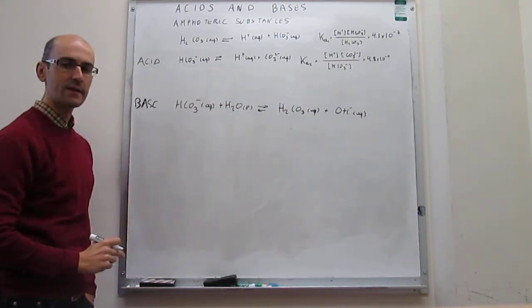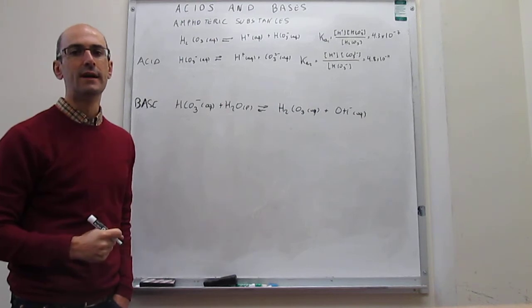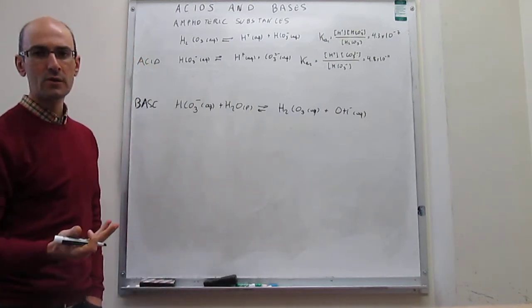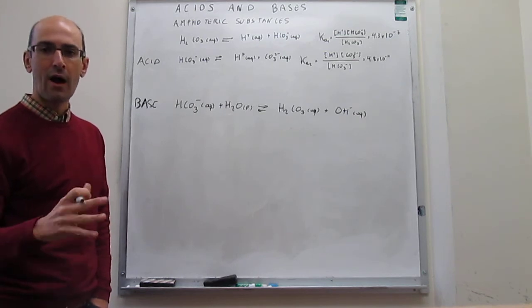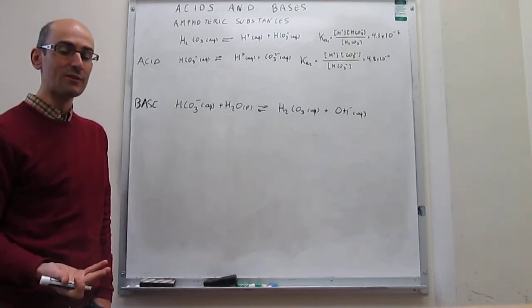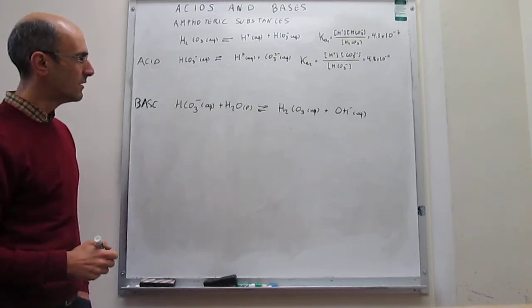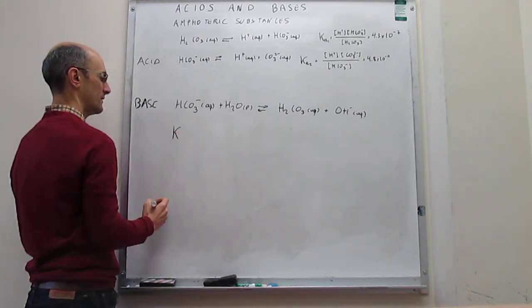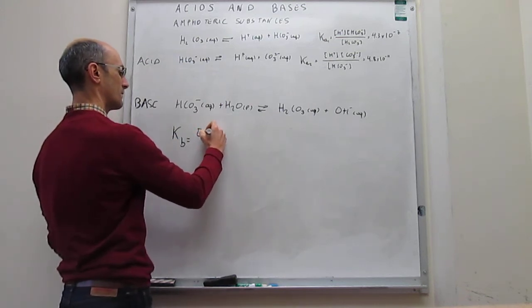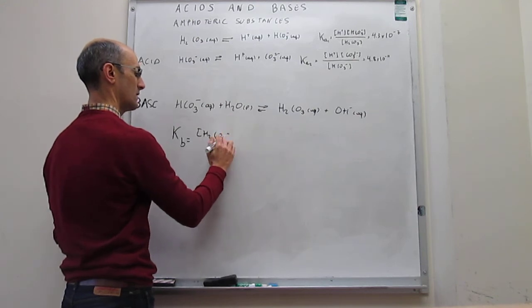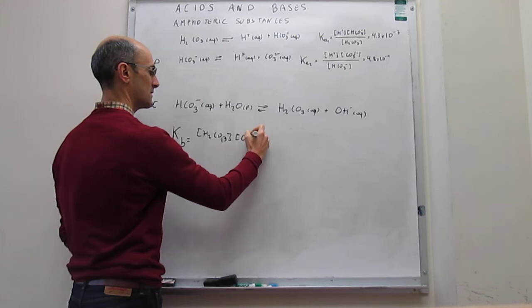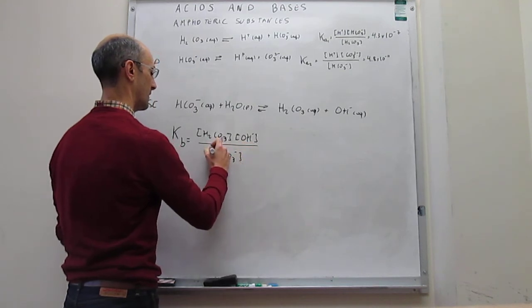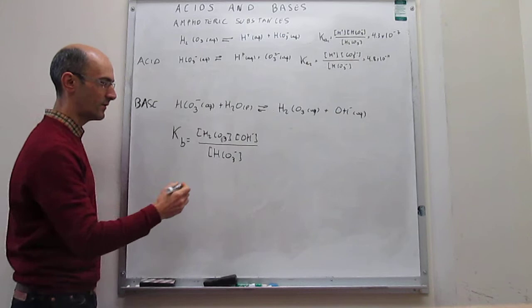That is the base reactivity for hydrogen carbonate. The question is which one — acid or base — predominates. We need the equilibrium constant for the base equilibrium, called Kb. That expression is the concentration of carbonic acid H₂CO₃ at equilibrium multiplied by the concentration of hydroxide at equilibrium, divided by the concentration of bicarbonate at equilibrium.